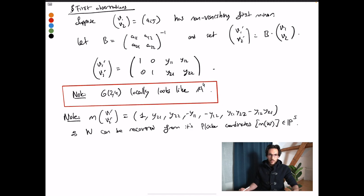Of course, what I'm saying here does not require that the first minor to be non-zero, because at least one minor will be non-zero. And then I can just invert that two-by-two matrix and then just do the arguments as before. So that locally, for any given W, locally at that point, the Grassmannian has an affine chart that looks like A^4.